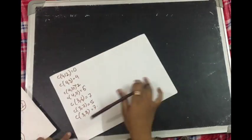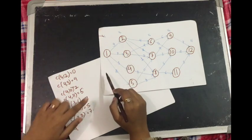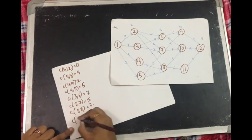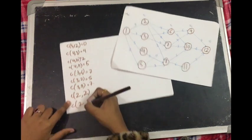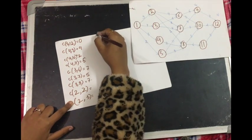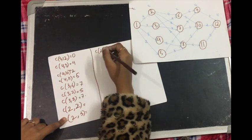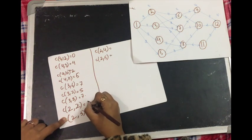Now similarly we calculate for stage 2. You can pause the video and calculate the values yourself for practice, then tally your answers. The vertices for stage 2 would be 2 and 3 — it's better that you pause the video and solve by yourself.